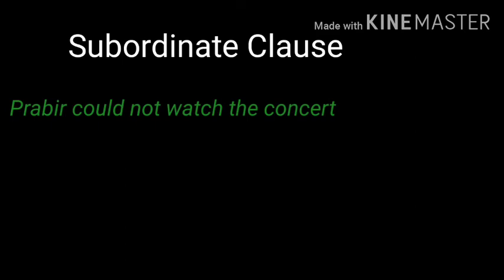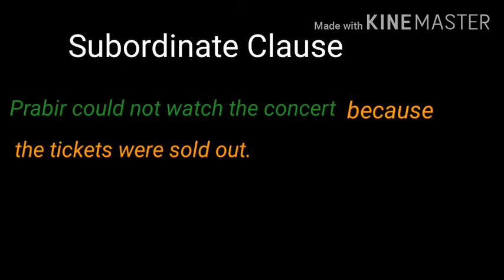A subordinate clause cannot stand alone and convey its meaning independently. It is always linked to a main clause and depends upon it to make its meaning clear. That means a subordinate or dependent clause needs the help of a main or independent clause to make its complete meaning. For example: Prabir could not watch the concert because the tickets were sold out. This sentence is joined by the conjunction because. Here, the main clause is Prabir could not watch the concert. The second clause, the tickets were sold out, will not make sense without the main clause. It is the dependent clause and tells us the reason why Prabir could not watch the concert.